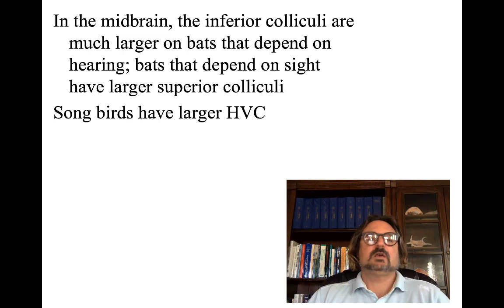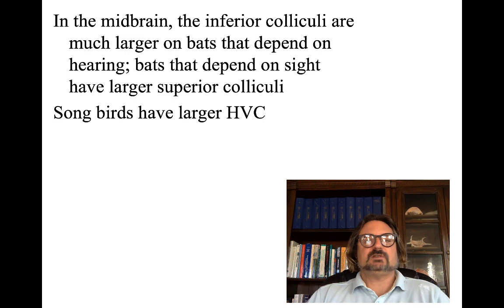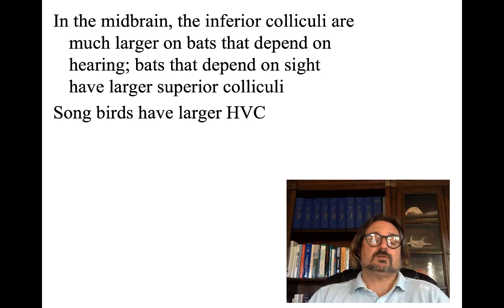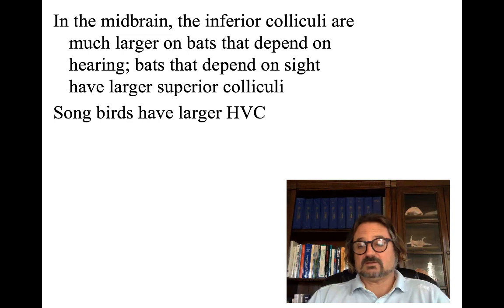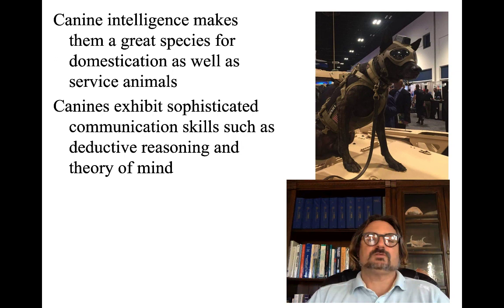In the midbrain, the inferior colliculi are much larger for bats that depend on hearing to navigate — not surprising since the inferior colliculi are involved in hearing. Over evolution, areas used more often tend to grow. Bats that depend on sight have larger superior colliculi, important for avoiding accidents while flying. And as noted, songbirds have this higher vocal center.